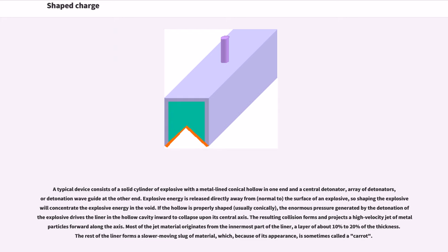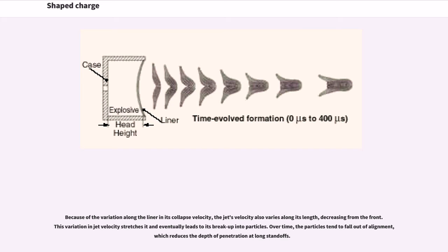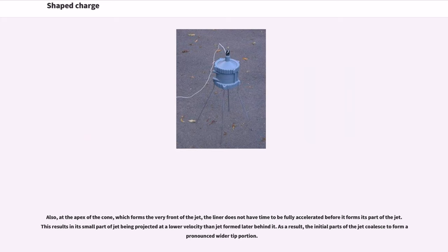The rest of the liner forms a slower-moving slug of material, which because of its appearance is sometimes called a carrot. Because of the variation along the liner in its collapse velocity, the jet's velocity also varies along its length, decreasing from the front. This variation in jet velocity stretches it and eventually leads to its breakup into particles. Over time, the particles tend to fall out of alignment, which reduces the depth of penetration at long standoffs. Also, at the apex of the cone which forms the very front of the jet, the liner does not have time to be fully accelerated before it forms its part of the jet. This results in its small part of jet being projected at a lower velocity than jet formed later behind it. As a result, the initial parts of the jet coalesce to form a pronounced wider tip portion.